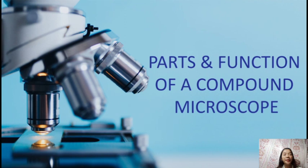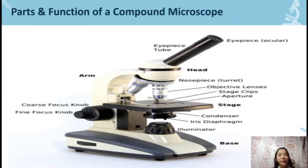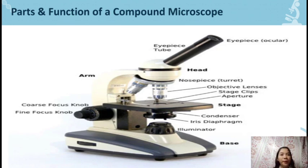Next, we have the parts and function of a compound microscope. This image shows the labeled parts of a compound microscope. We have here the eyepiece or ocular lens, the eyepiece tube, the head, the nose piece, the objective lenses, the stage clips, aperture, stage, condenser, iris diaphragm, illuminator, the coarse focus knob, the fine focus knob, and the base.